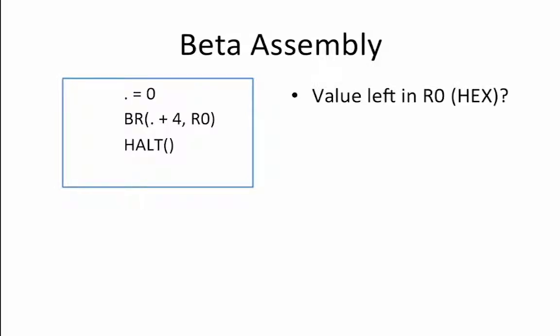Now let's take a look at this short piece of code. Our goal is to determine the value left in R0 in hexadecimal. The dot equals 0 notation once again tells us that our first instruction, the branch, is at address 0. The branch instruction then branches to location dot plus 4 which equals 0 plus 4 which equals 4. This is the address of the HALT instruction.